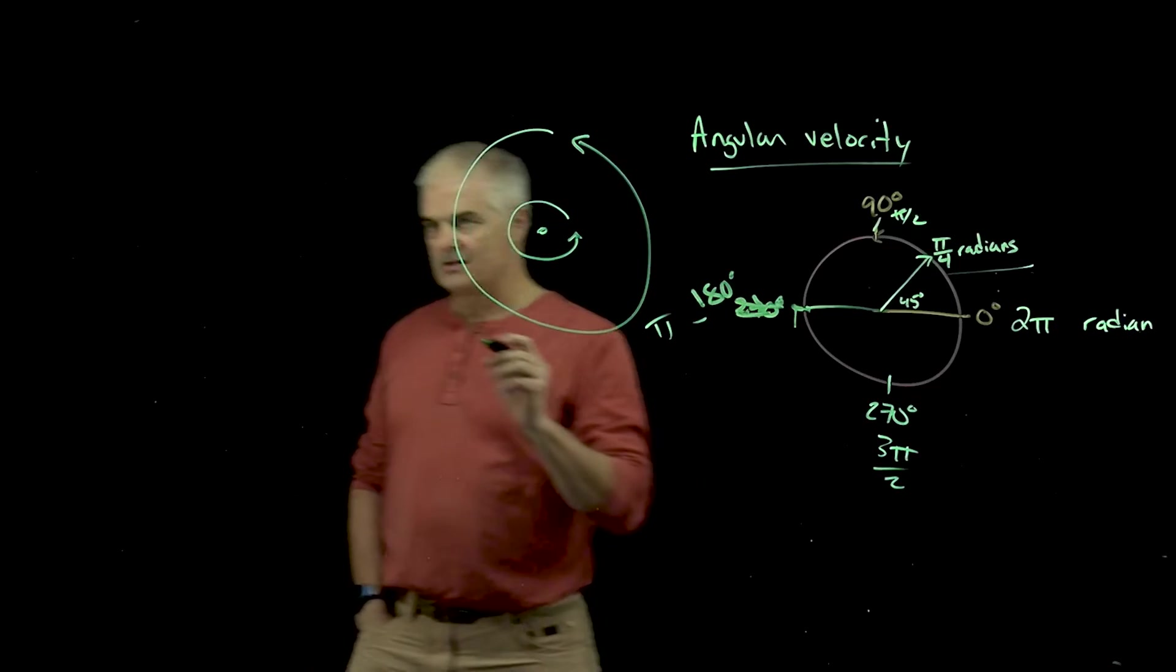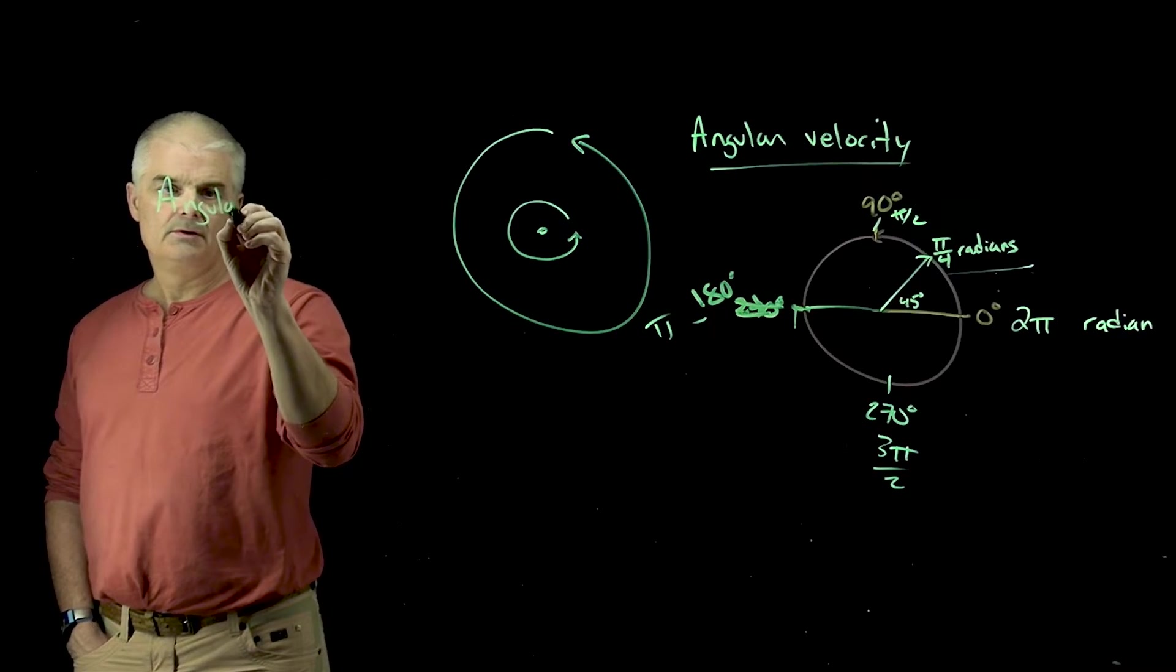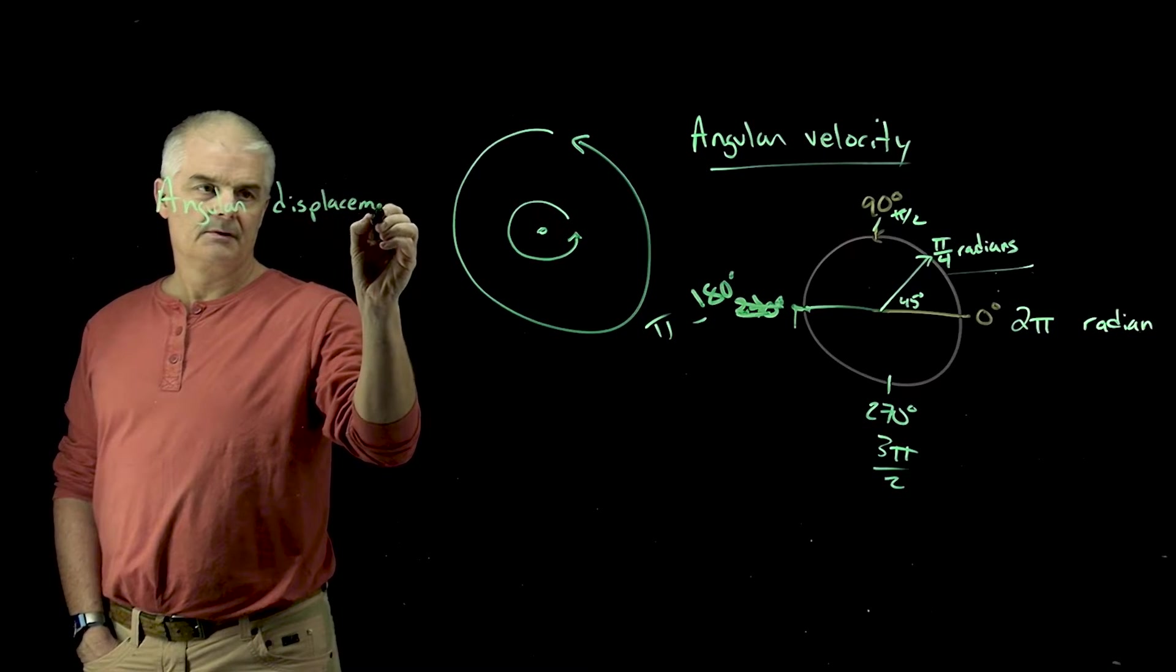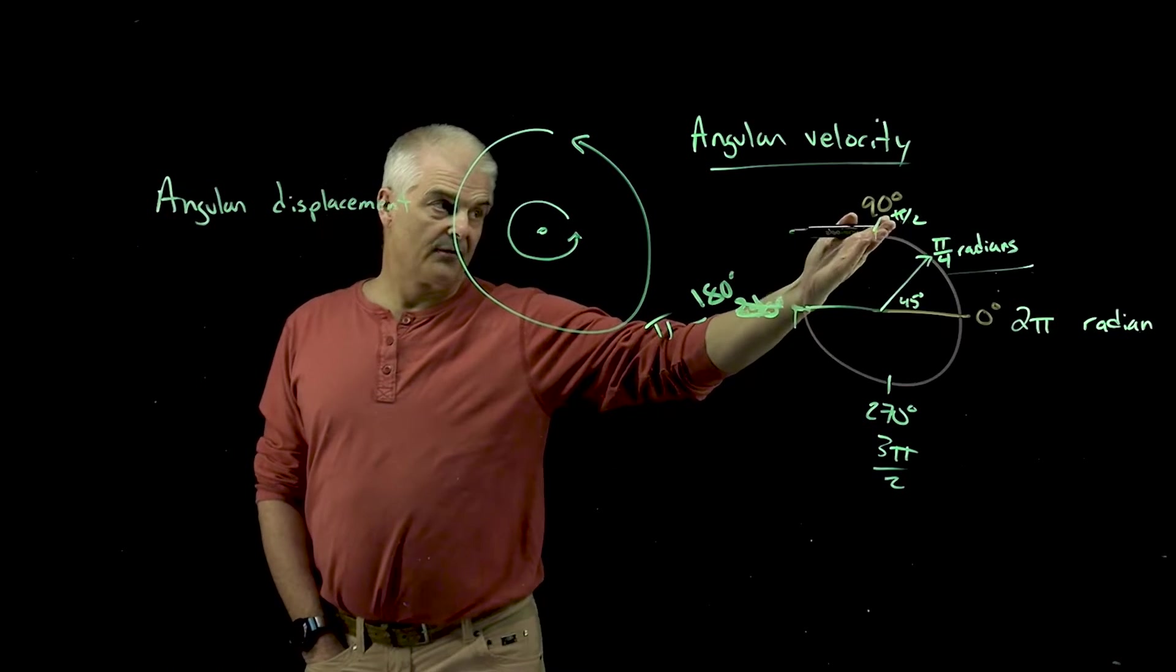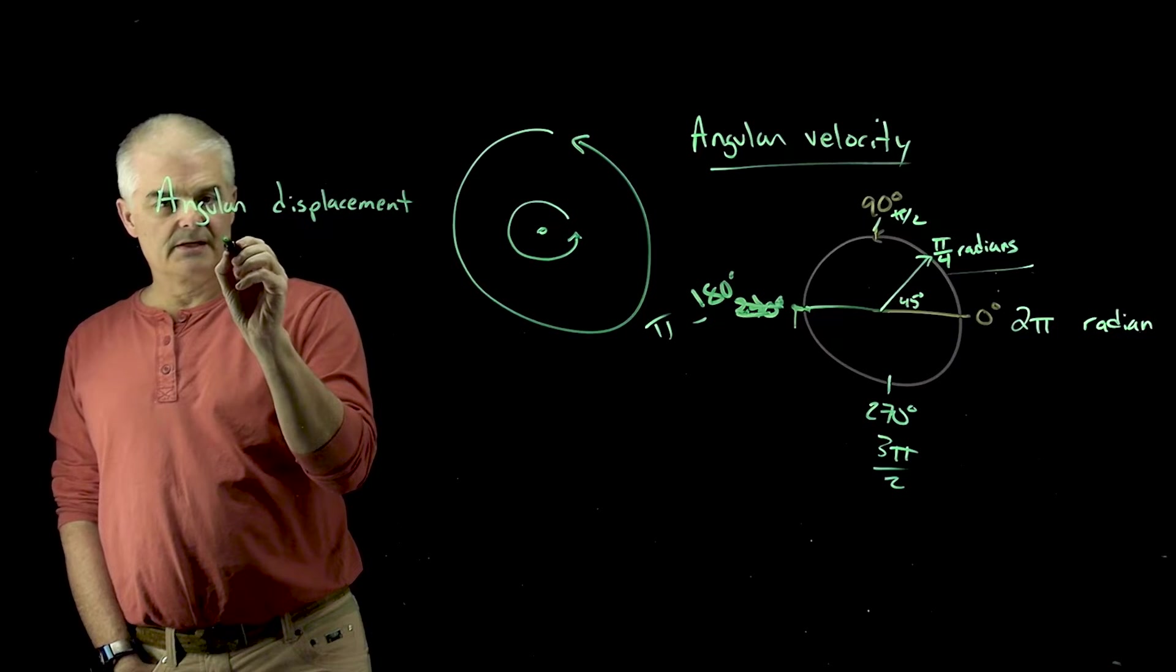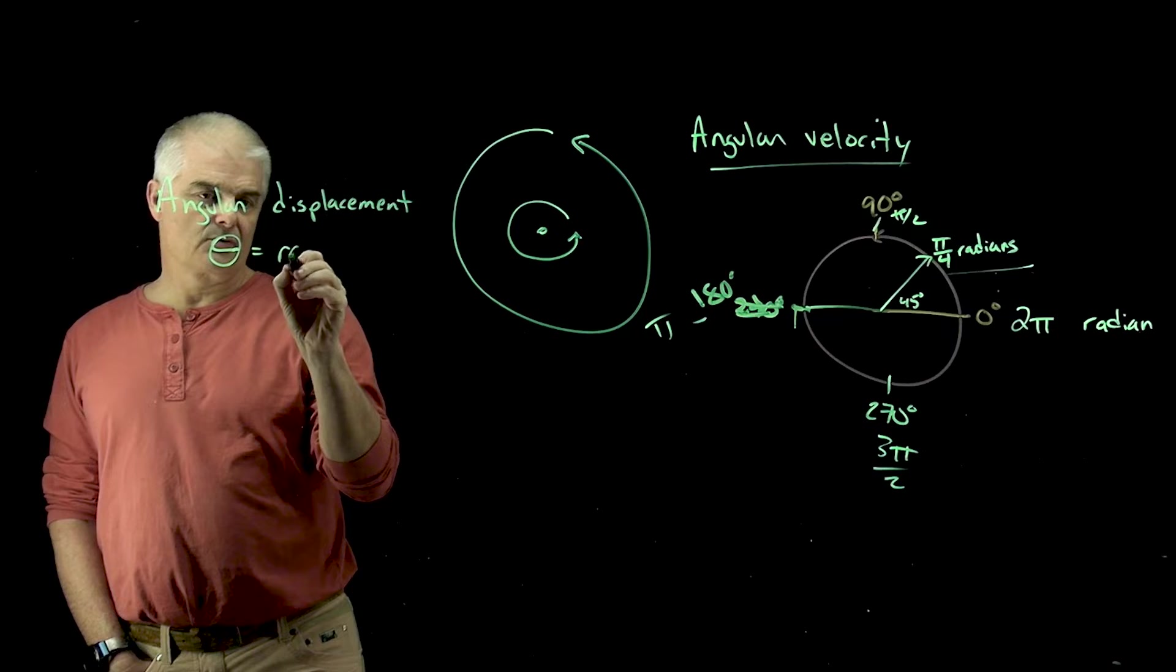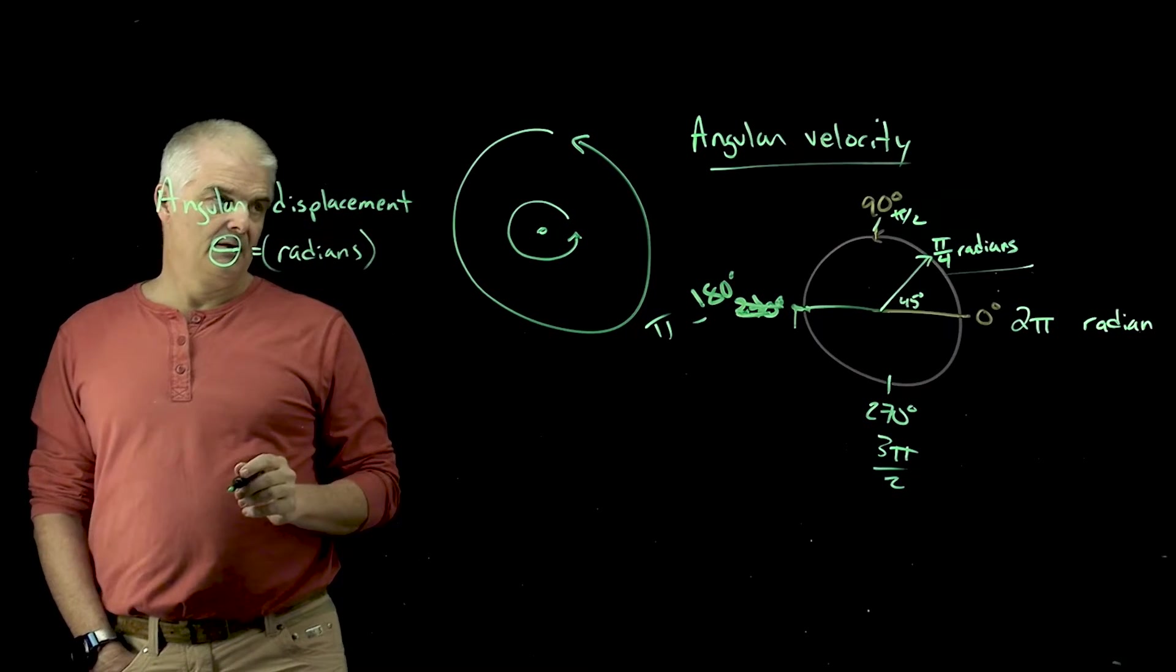So this is called, so let's kind of summarize. We've got something called angular displacement. And that's this, pi over 4, pi over 2. So it's the angle displaced, and that's the symbol theta, and the measure is in radians. This is the unit.